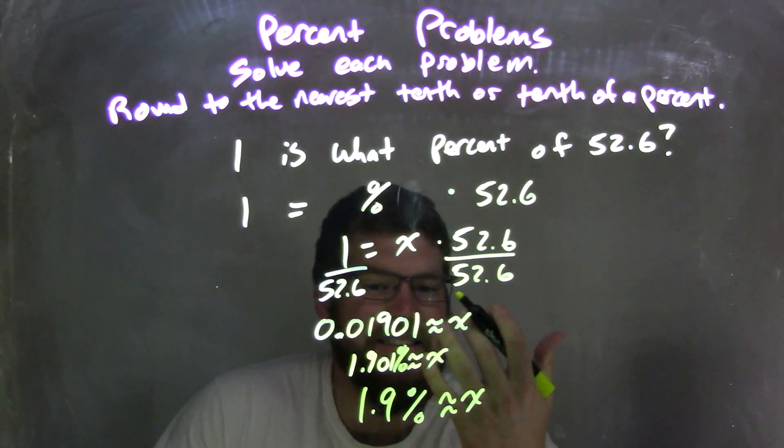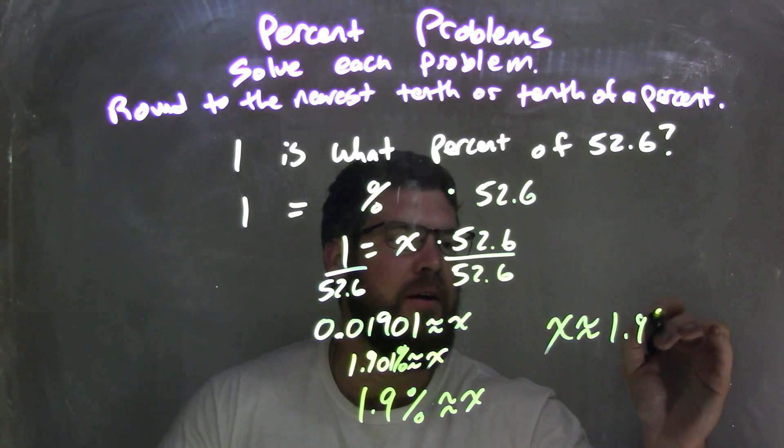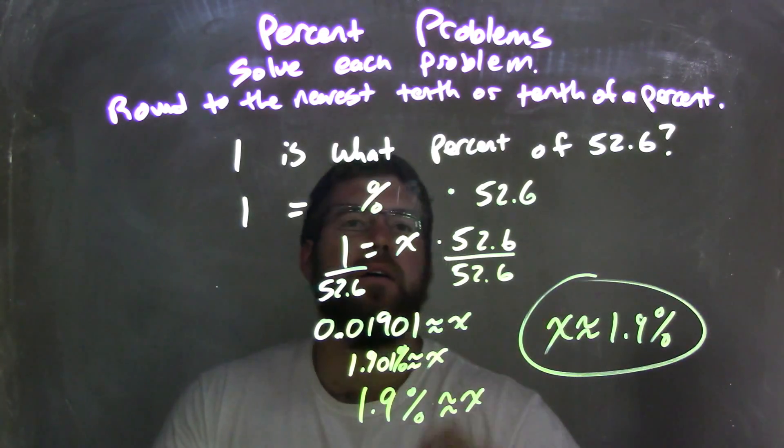We can write that nice and neat with x coming first: x is approximately equal to 1.9%. And that's my final answer.